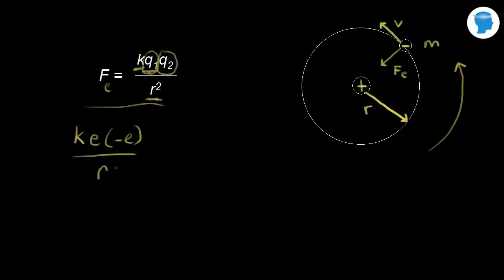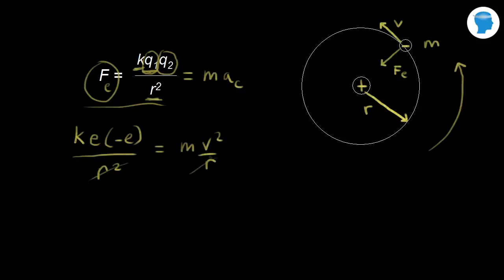Force equals mass times acceleration by Newton's second law, where M is the mass of the electron. This is the centripetal acceleration, since we're talking about a centripetal force. The centripetal acceleration equals V squared over R, so we plug in M times V squared over R. We can immediately cancel one R, and since we only care about the magnitude of the electric force, we can ignore the negative sign. This simplifies to KE squared over R on the left and MV squared on the right.